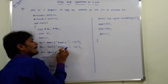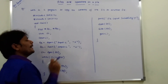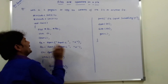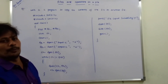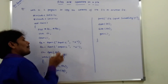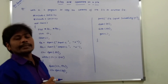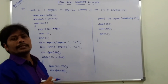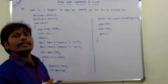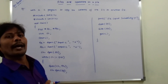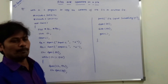output.c file is opened using fopen in write mode, and it is pointed by the file pointer fp2. Suppose output.c file is not existing — then it creates a new file with the name output.c.